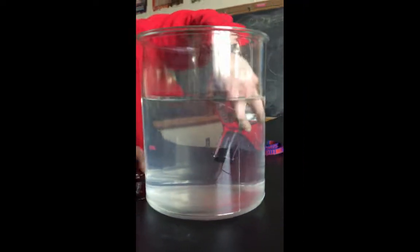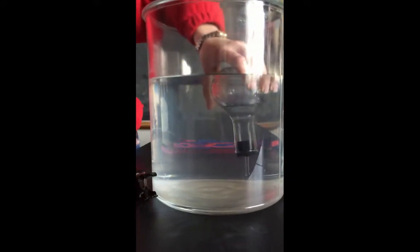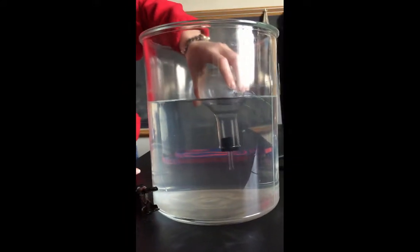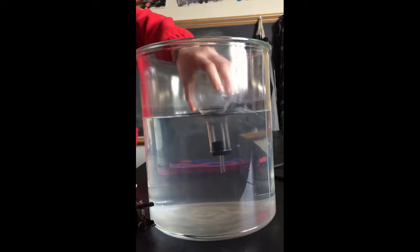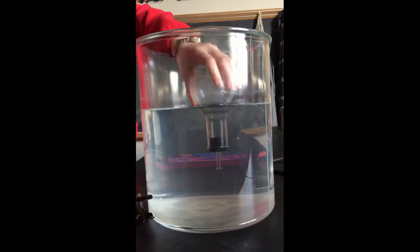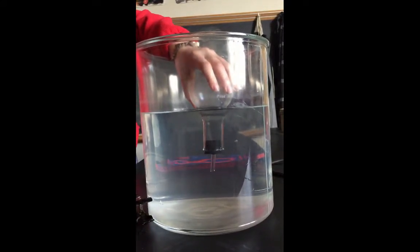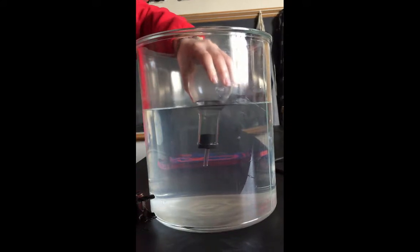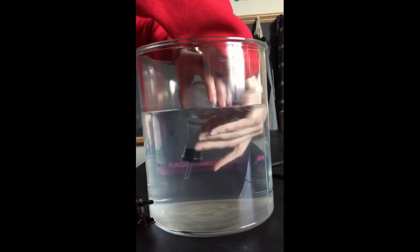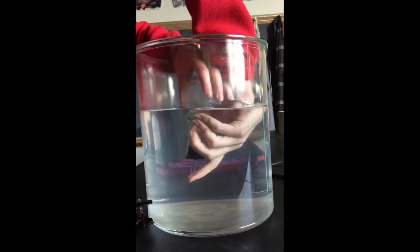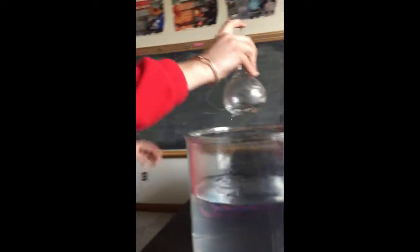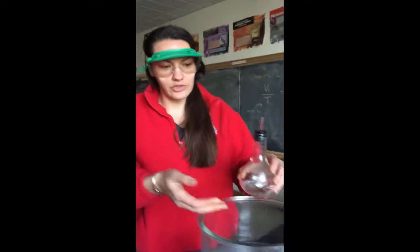Now we're going to line up the liquid levels. You can see the liquid levels are not even here, nor are they even here. We're going to make them equal so the pressure inside the bulb and outside the bulb is the same. I'm going to recap and now we're going to measure the volume of water that is in our flask.